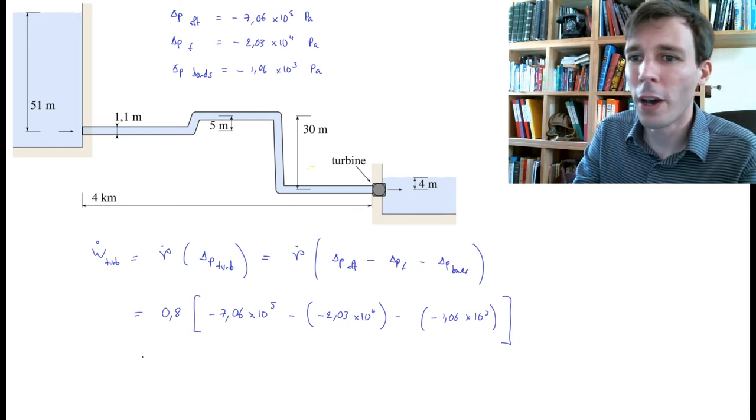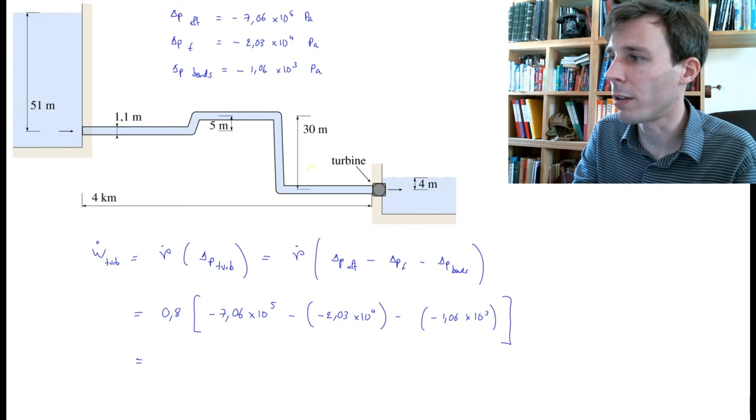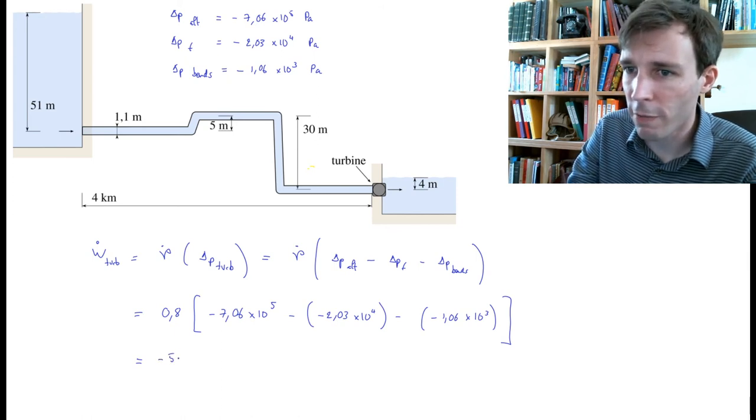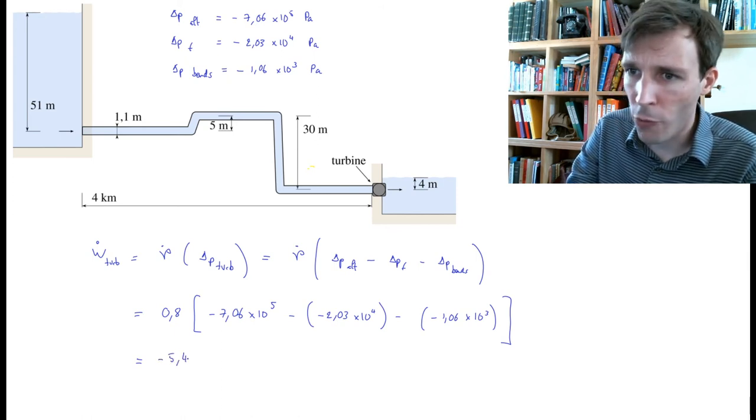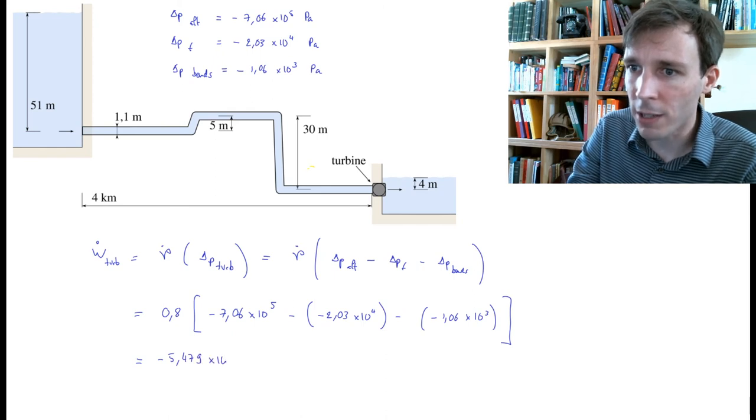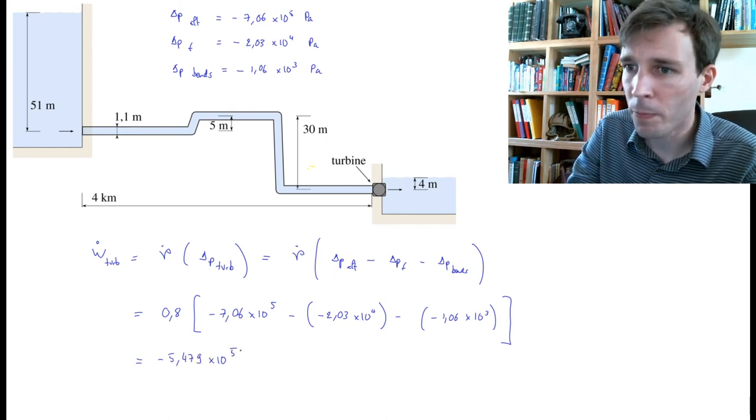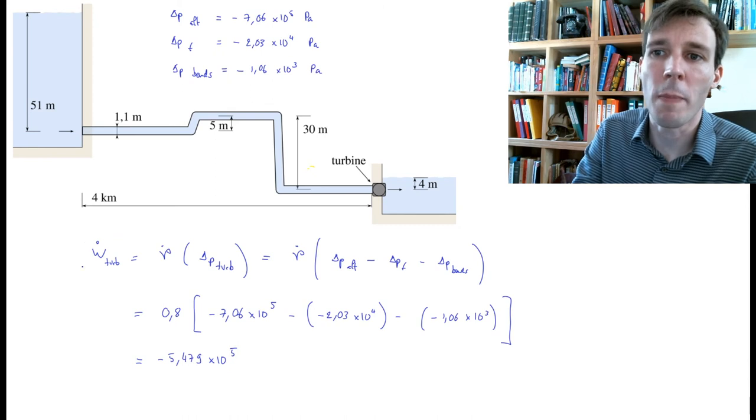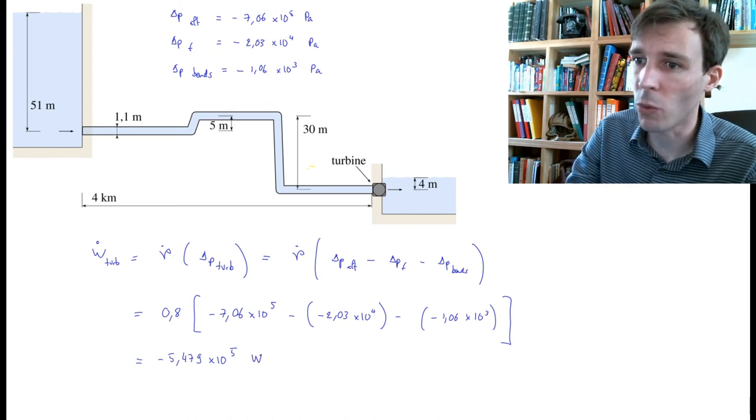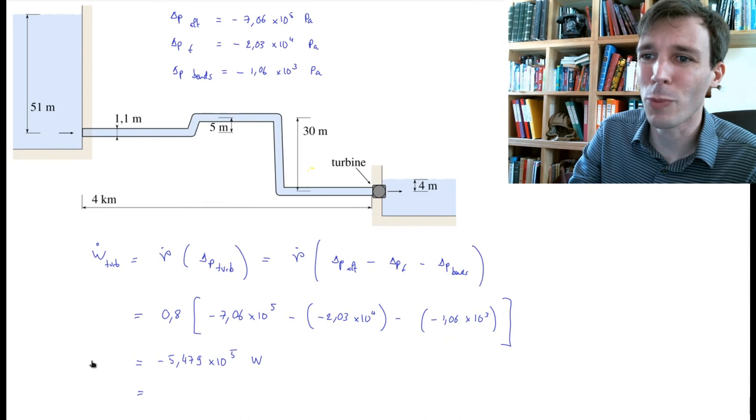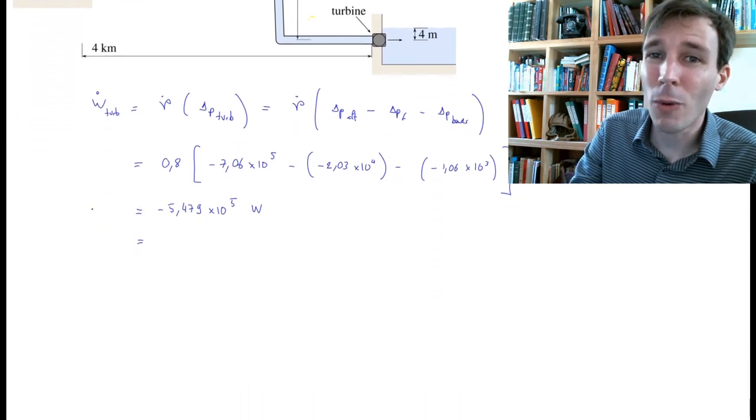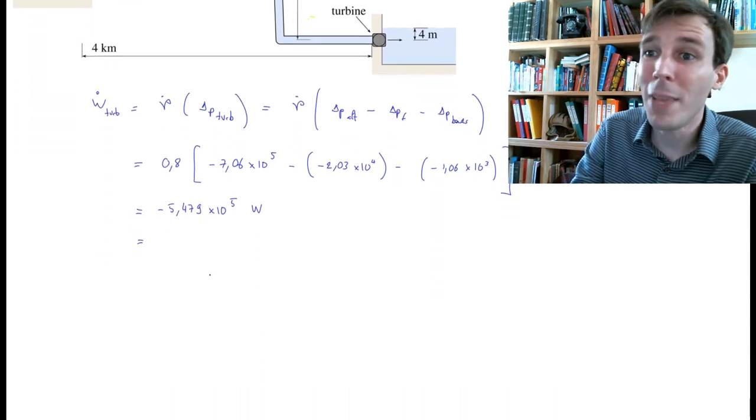So I can close my parenthesis with square brackets. And if you put this into your calculator, you will get something like this: you should get minus 5.479 times 10 to the power 5. And what is the unit of a power? It is watts, so it's expressed in watts.